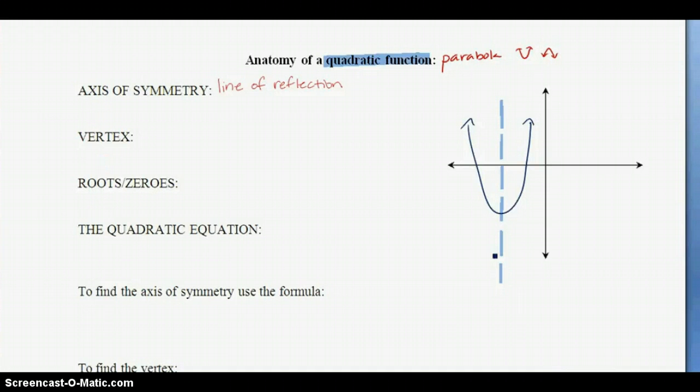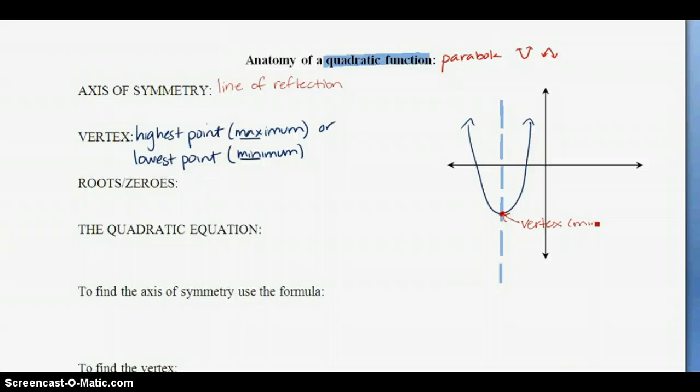The next thing that's important is the vertex. The vertex can be either the highest point, which would be called a maximum or a max, or it's going to be the lowest point, which is going to be more often the case, and that is called a minimum or a min. So let's go label that in our picture, the vertex. You can see that it is on the axis of symmetry. In our case, it's a minimum.